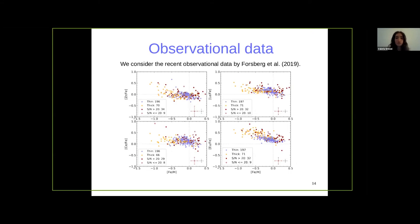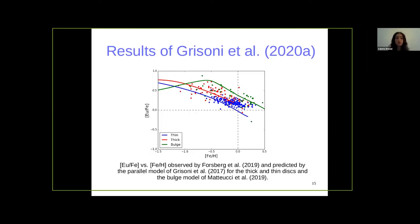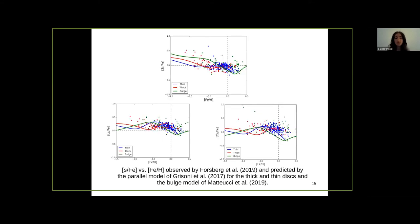The observational data we consider are from Forsberg et al., which distinguish between thick disk, thin disk, and bulge for chemical elements such as zirconium, lanthanum, cerium, and europium. Starting with europium: here I show europium over iron versus [Fe/H] observed by Forsberg, compared with our parallel model for the thick and thin disk, and also the bulge model of Matteucci et al., which assumes an even faster formation and shorter timescale with respect to the thick and thin disk. We can nicely see that we both observe and predict three distinct sequences, with the bulge being europium-enhanced and its track shifted to lower iron metallicities due to its faster formation, in agreement with the time delay model.